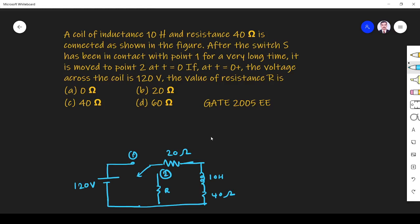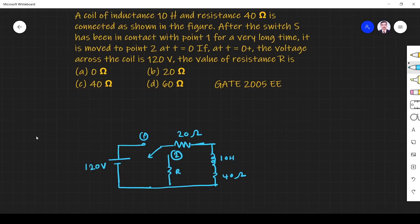The question is: a coil of inductance 10 Henry and resistance 40 ohm is connected as shown in the figure. After the switch has been in contact with point 1 for a very long time, it is moved to point 2 at T=0. If at T is equal to 0 plus the voltage across the coil is 120 volts, what is the value of resistance R?